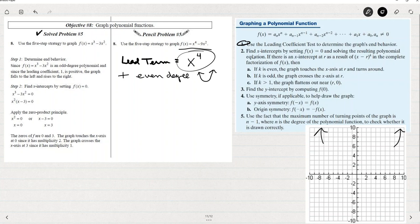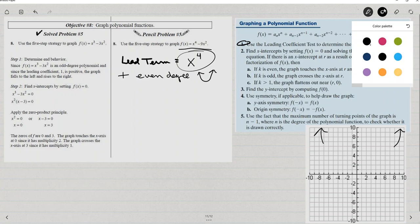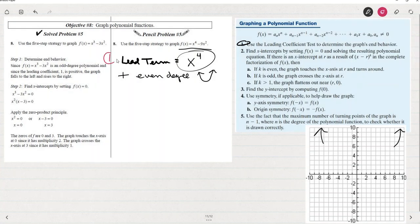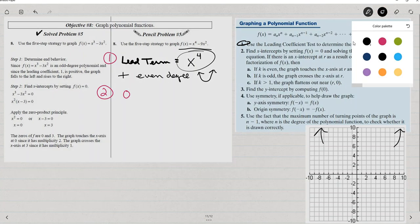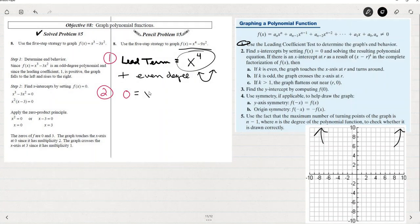Number two, find the x-intercepts by setting f of x equal to zero. So that was number one. Number two, the x-intercepts. If I let f of x equals zero, so I have zero equals x to the fourth minus nine x squared, I can solve that for x by factoring.